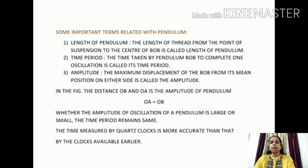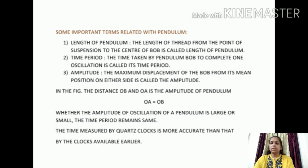The maximum displacement of the bob from its main position on either side is called the amplitude. In the figure, the distances OB and OA show the amplitude of the pendulum, and the values of OA and OB are always the same. Whether the amplitude of oscillation of a pendulum is large or small, the time period remains the same.